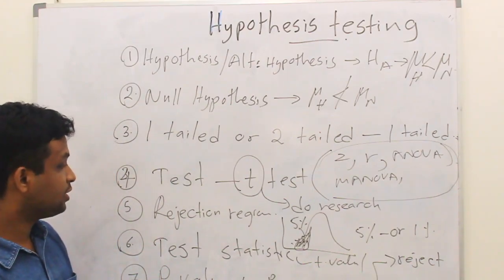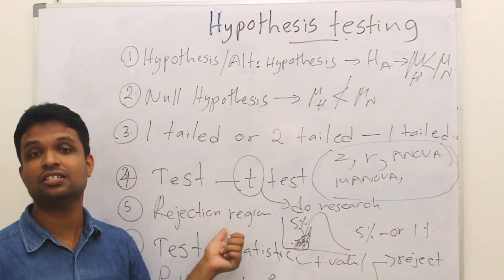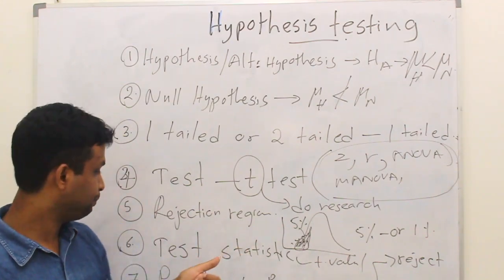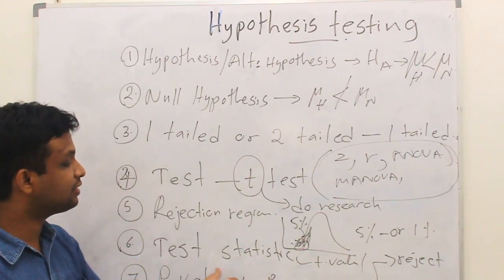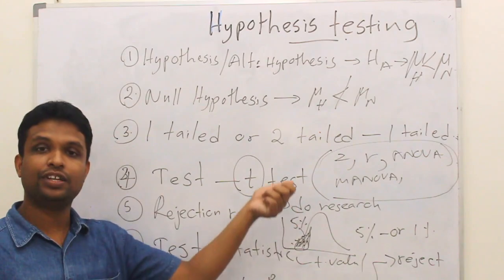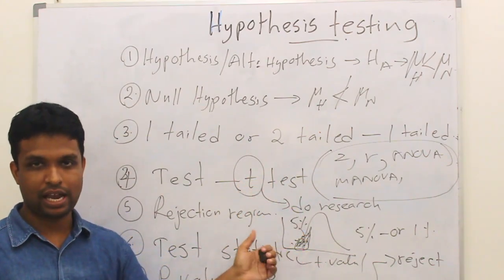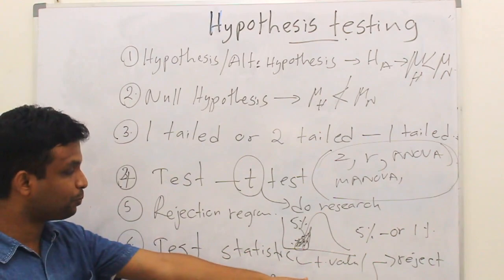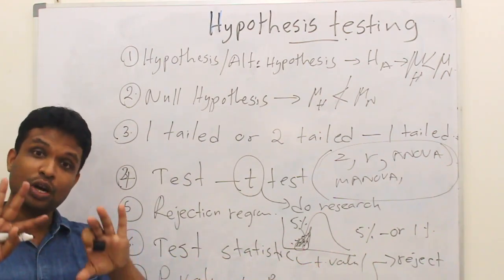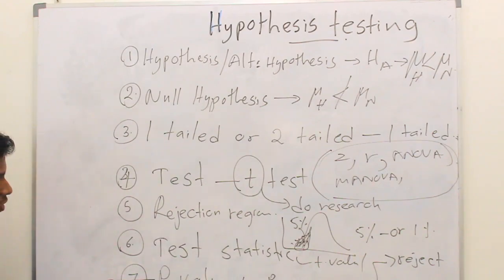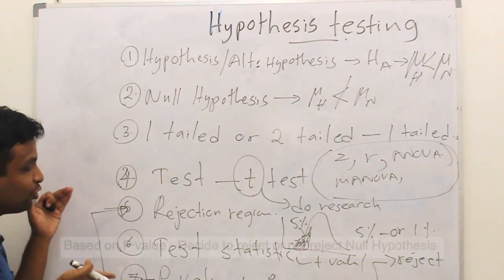Based on the test, you decide the rejection region — whether 5% is enough or whether you need 1%. After the data analysis process, you will get a test statistic; if it is a T-test, you will get a t-value. Then you have to find the corresponding p-value for the t-value and compare this p-value against the rejection region.